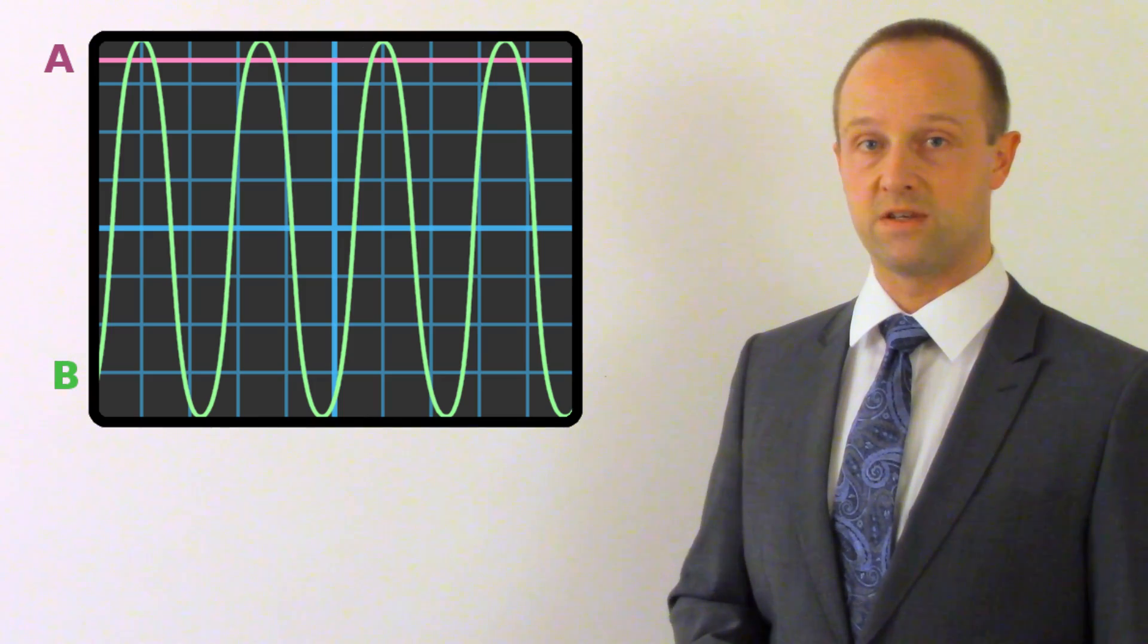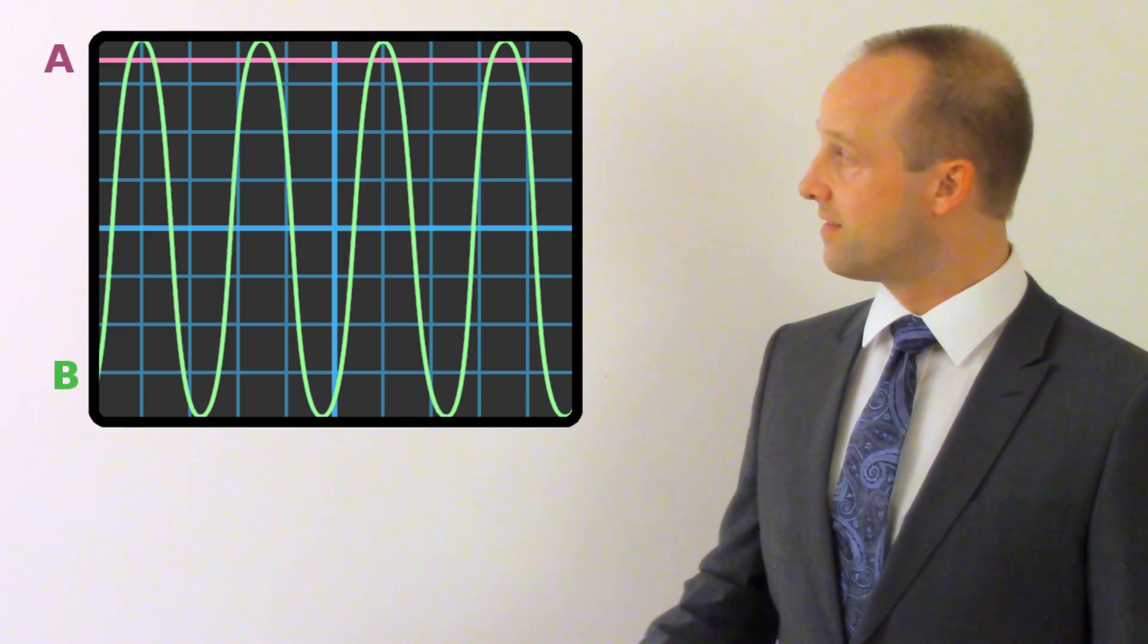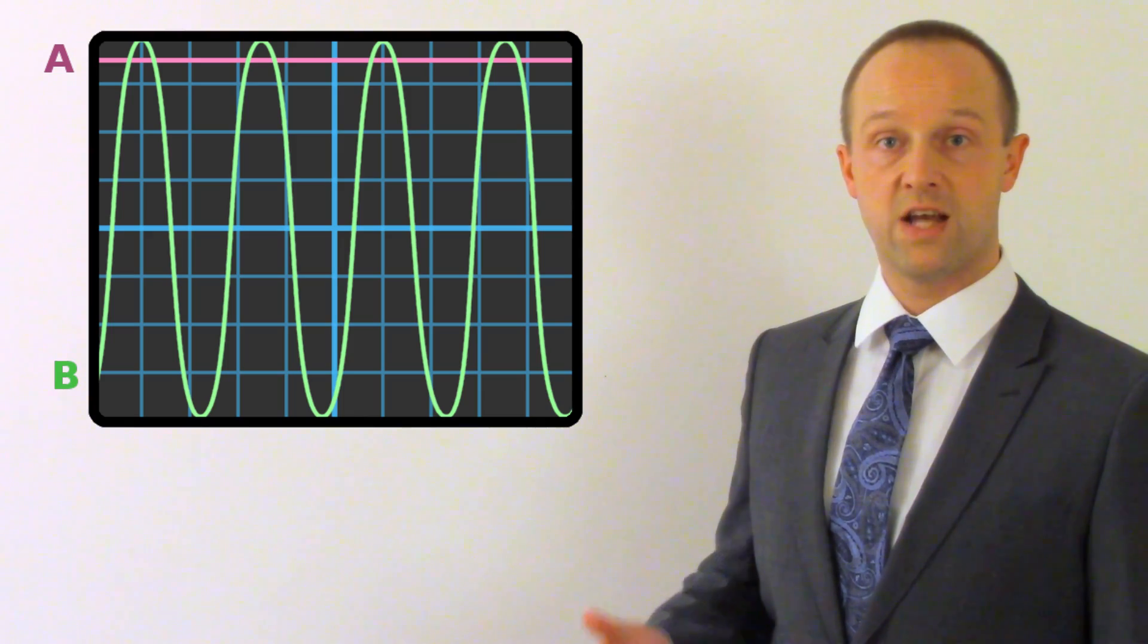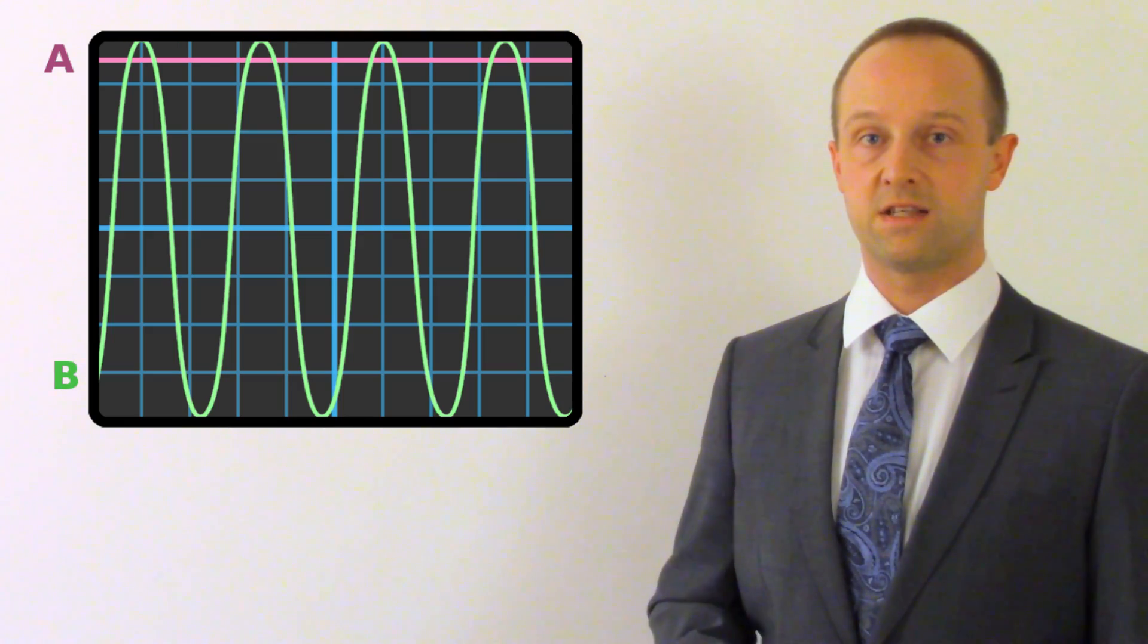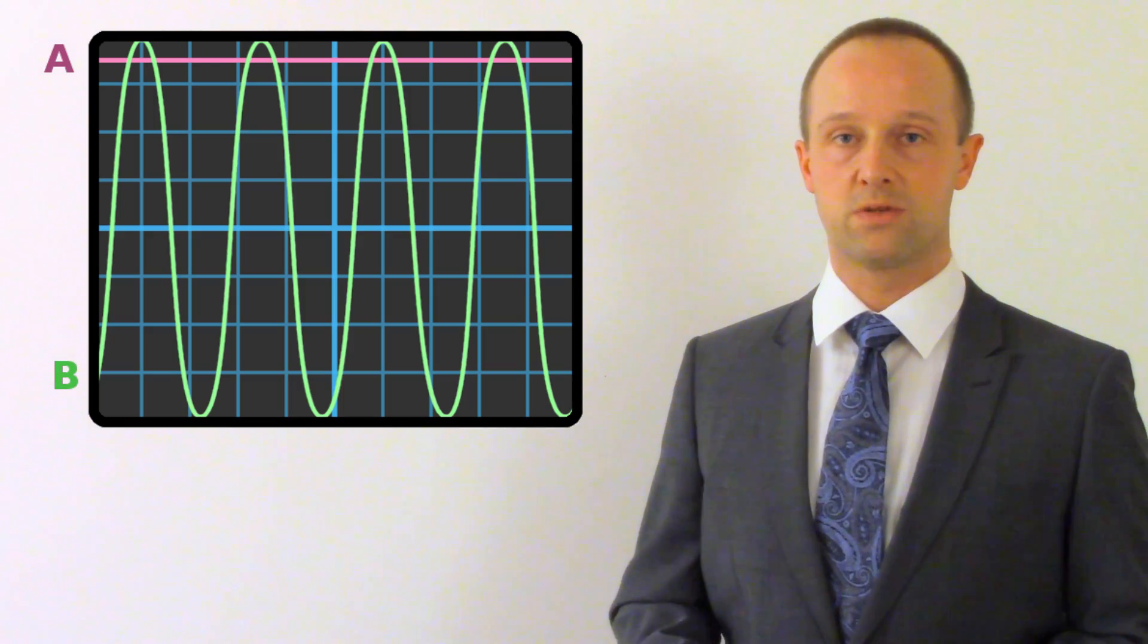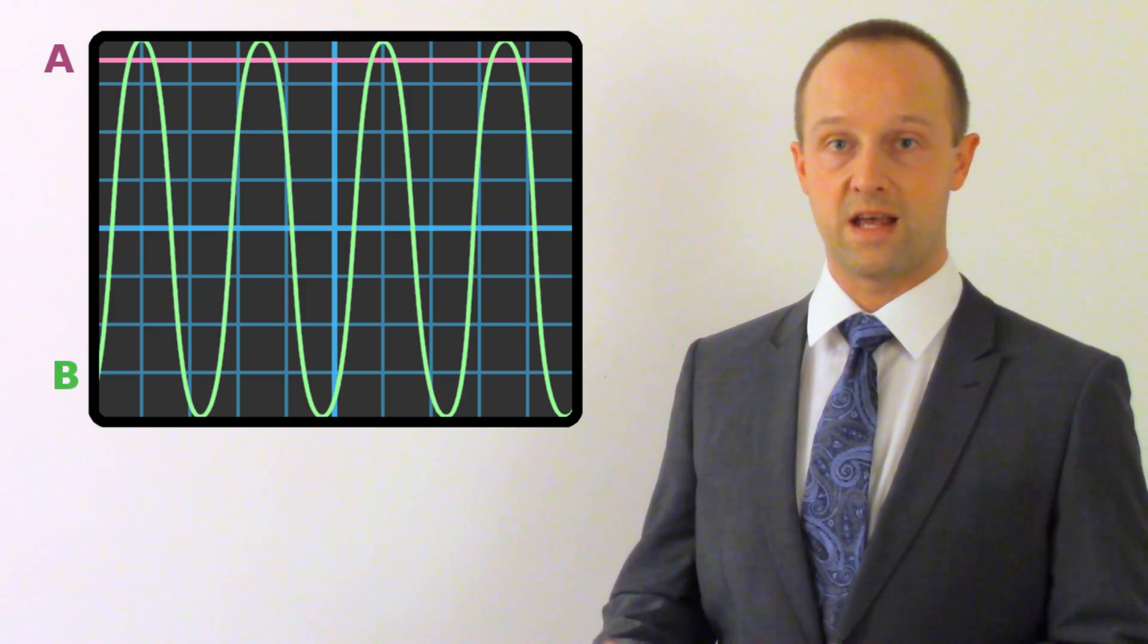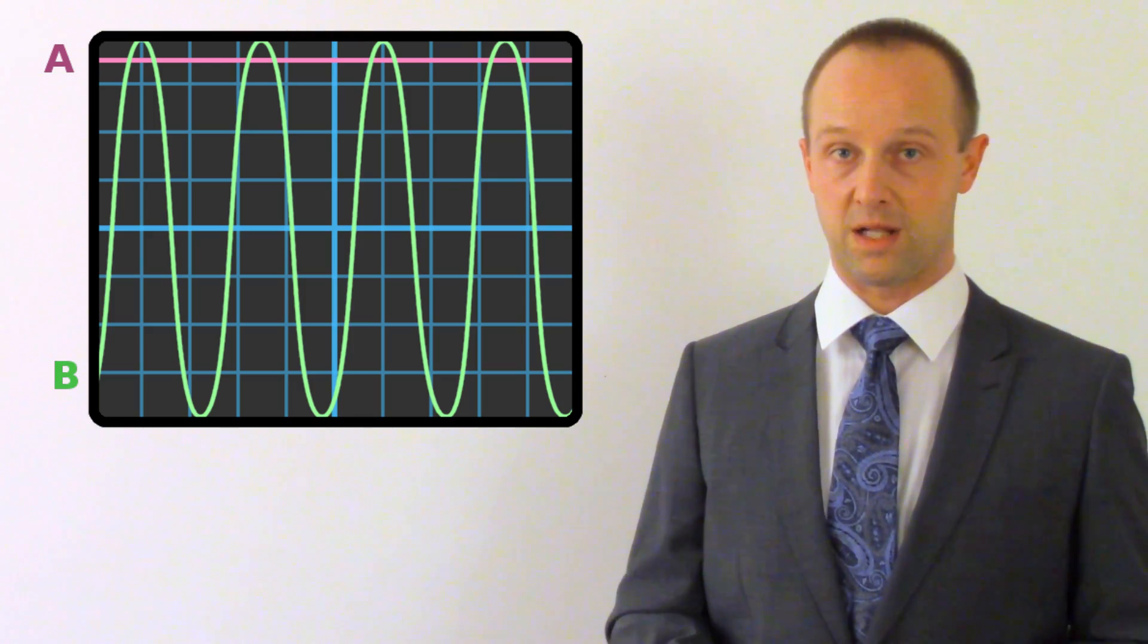Now, let's focus on line A for a start, the pink line. This line, its value isn't changing over time. It's always got that positive potential difference and it stays the same. So this is a potential difference which is always going the same way around the circuit. This is our DC supply.